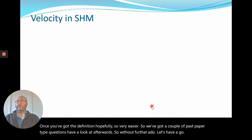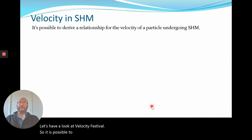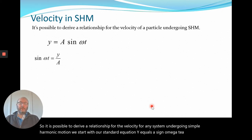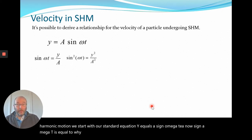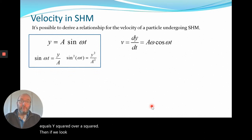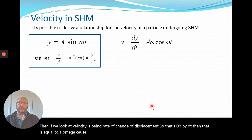Let's have a look at velocity first of all. It is possible to derive a relationship for velocity for any system undergoing simple harmonic motion. We start with our standard equation y = A sin(ωt). Now sin(ωt) equals y over A. If we square both sides, we get sin²(ωt) = y²/A². Then looking at velocity as the rate of change of displacement, dy/dt equals Aω cos(ωt) — that's our derivative of A sin(ωt).